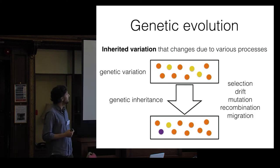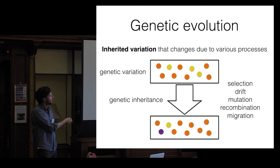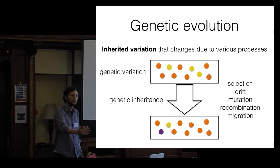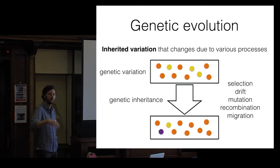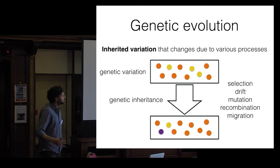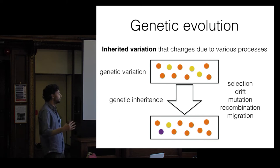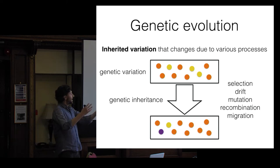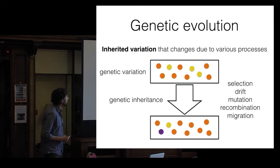When thinking about genetic evolution, the variation is in alleles and genes, the inheritance is genetic through DNA replication, and biologists have various processes to explain evolutionary change: selection, which Darwin talked about, but also drift, mutation, recombination, and migration. Some increase the frequencies of traits, some introduce new variation.